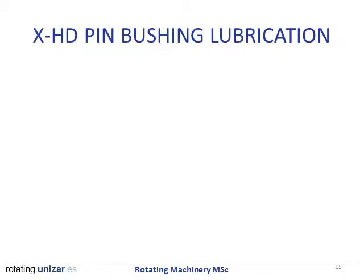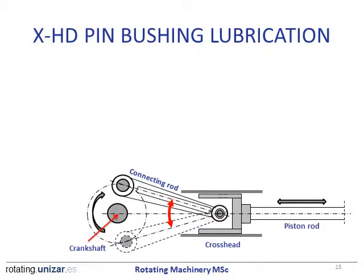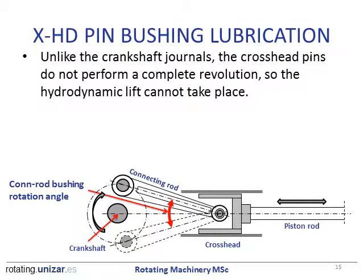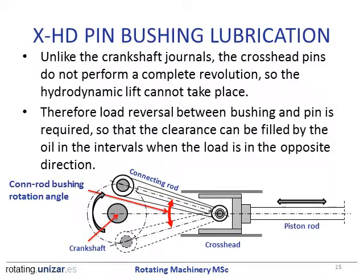Looking at the lubrication of the crosshead pin bushing: the piston rod moves back and forth, and the connecting rod rotates fully on the crankshaft end, but on the crosshead end the rotation is very limited. So unlike the journals on the crankshaft, the crosshead pins do not perform a complete revolution. Because of this, hydrodynamic lift cannot take place as in a conventional bearing. Therefore, load reversal between bushing and pin is needed, so the clearance can be filled by oil during the intervals when the load is in the opposite direction.